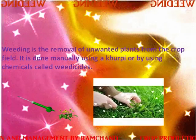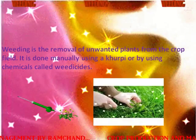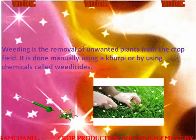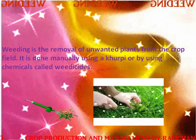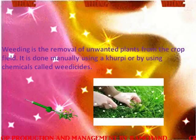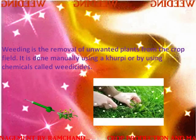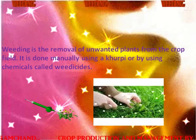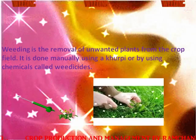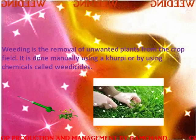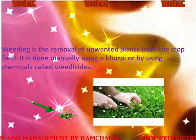Weeding. Weeding is the removal of unwanted plants from the crop field. It is done manually using a khurpi or by using chemicals called weedicides.